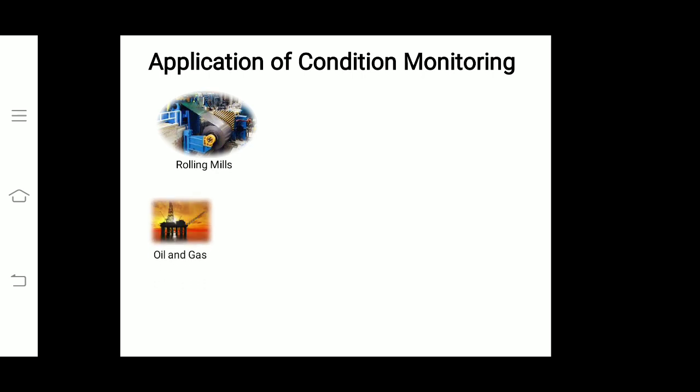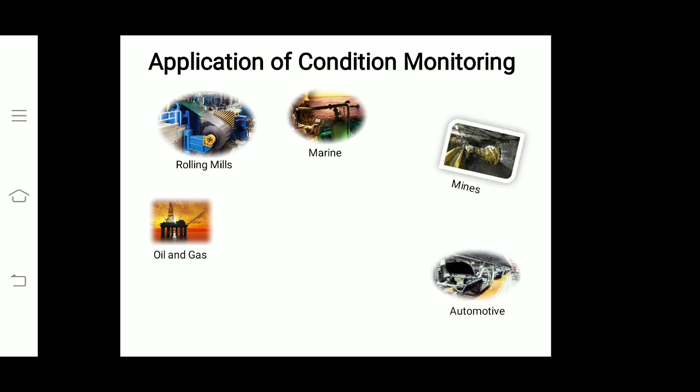Regarding applications of condition monitoring — if you are a good condition monitoring engineer, there are many ways to earn well in industry. The oil and gas sector, marine industry, and mining sector all need condition monitoring engineers. In mines, rotating machines like drills require condition monitoring. In automotive, with EVs coming, we try to monitor brushless and induction motors in electric vehicles to predict faults before they occur. Power generation with different types of generators and aerospace are also important application areas.